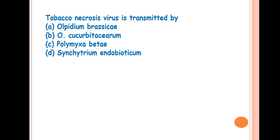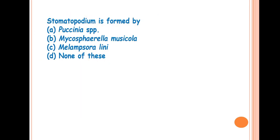Next question is, tobacco necrotic yellow vein virus is transmitted by? Answer is Olpidium brassicae. This is a fungus which transmits the tobacco necrotic yellow vein virus.